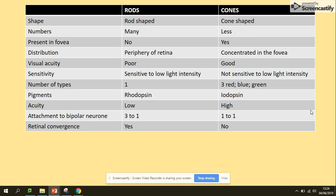Visual acuity is poor for rod cells because they only allow you to see in black and white, and cone cells allow you to see in colors, so it's good. Sensitivity: rod cells are sensitive to low light intensity, cones are sensitive to higher light intensity.